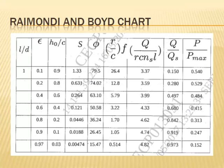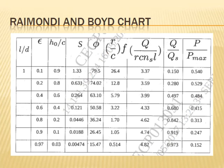In the previous lecture, we learned the Petroff's equation and then went for the Reynolds equation. We understand that there is no general closed-form solution to the Reynolds equation. However, approximate solutions have been obtained by using electrical analogy or numerical methods. Albert Raimondi and John Boyle of Westinghouse Research Laboratories solved the Reynolds equation on a computer using iteration method, obtaining solutions in the form of unitless parameters and charts.